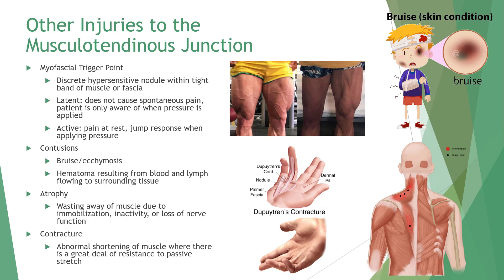Contusions are the result of a sudden blow to the body and can be deep or superficial. Hematomas can result from blood and lymph flowing into surrounding tissues — a localization of extravasated blood into a clot encapsulated by connective tissue. The speed of healing depends upon the extent of damage. Chronically inflamed and contused tissues may result in calcium deposits, also known as myositis ossificans, which we can help prevent by protecting the contused area with padding.